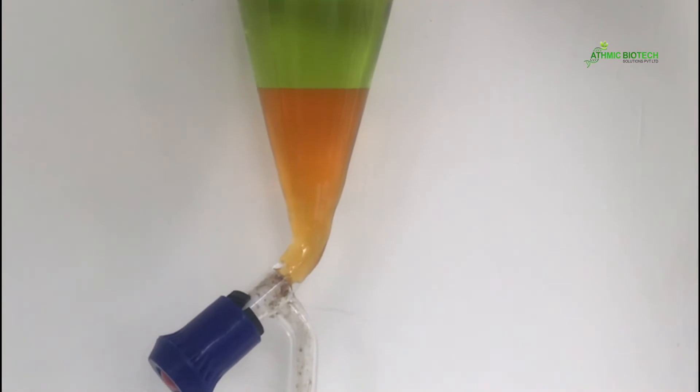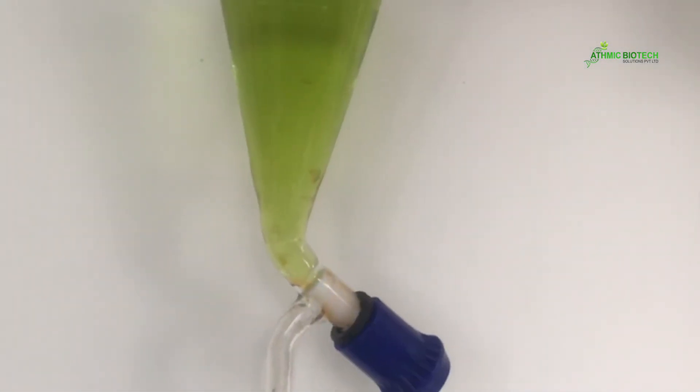An immiscible layer will form because acetone is a polar solvent and hexane is a non-polar solvent. Have you noticed in the separating funnel there are two color variations? Why did that occur? Because the chlorophyll, that green color, is a polar fraction of the plant sample.